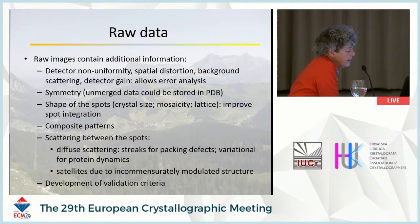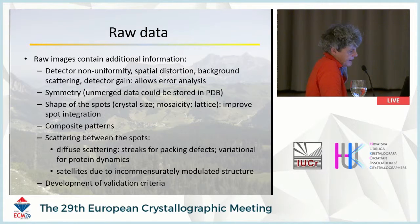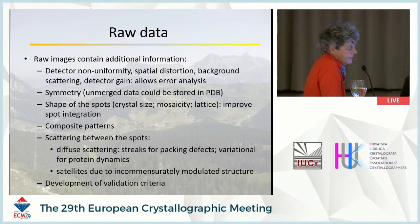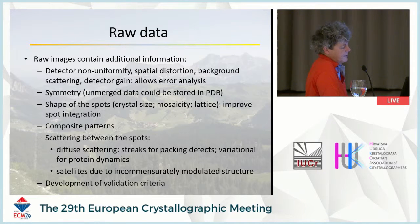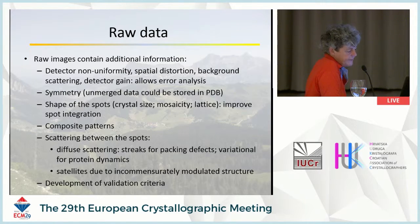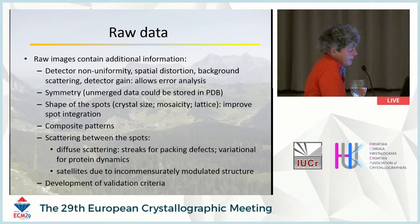There is scattering between the spots — diffuse scattering — which is growing in importance and interest. Diffuse scattering can appear as streaks between Bragg peaks, indicating packing defects, or as variational diffuse scattering which indicates protein dynamics. There are also incommensurately modulated or composite structures with satellite reflections between the main reflections, which you can either ignore or use to solve a super-lattice structure.